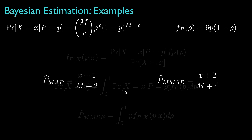Therefore, we see that the MAP and minimum mean square error estimators are different for this problem. Without using the prior, we'd estimate the success probability as x over m. But because we use a prior that favors a success probability close to one-half, both estimators tend to move the estimate toward one-half. For a large number of trials these estimators will be similar, but for a smaller number of trials the estimates could be significantly different. The MAP estimator minimizes uniform cost for errors, whereas the MMSE minimizes squared error.